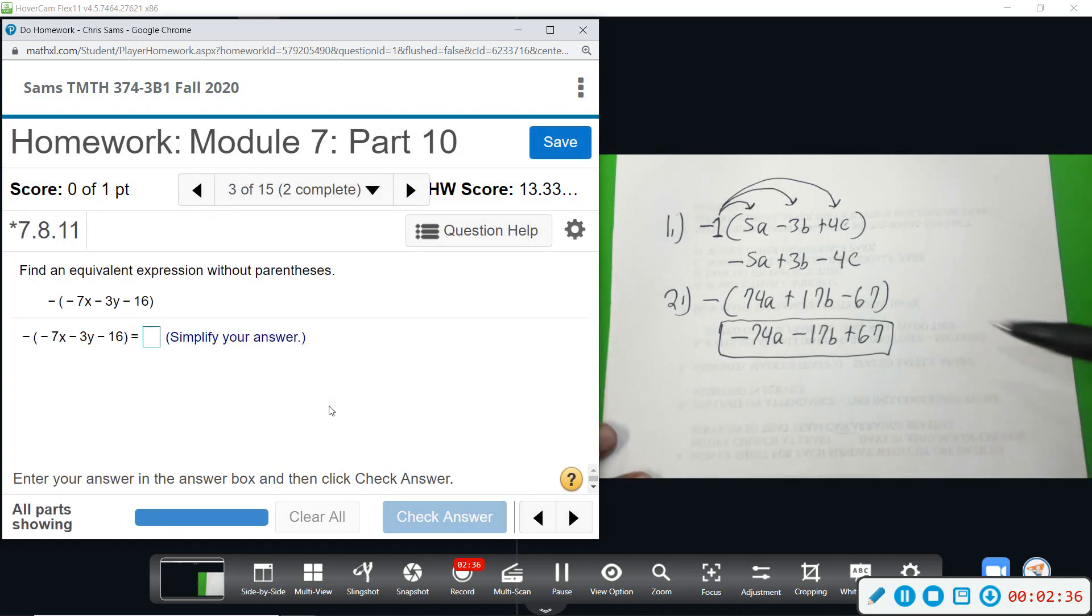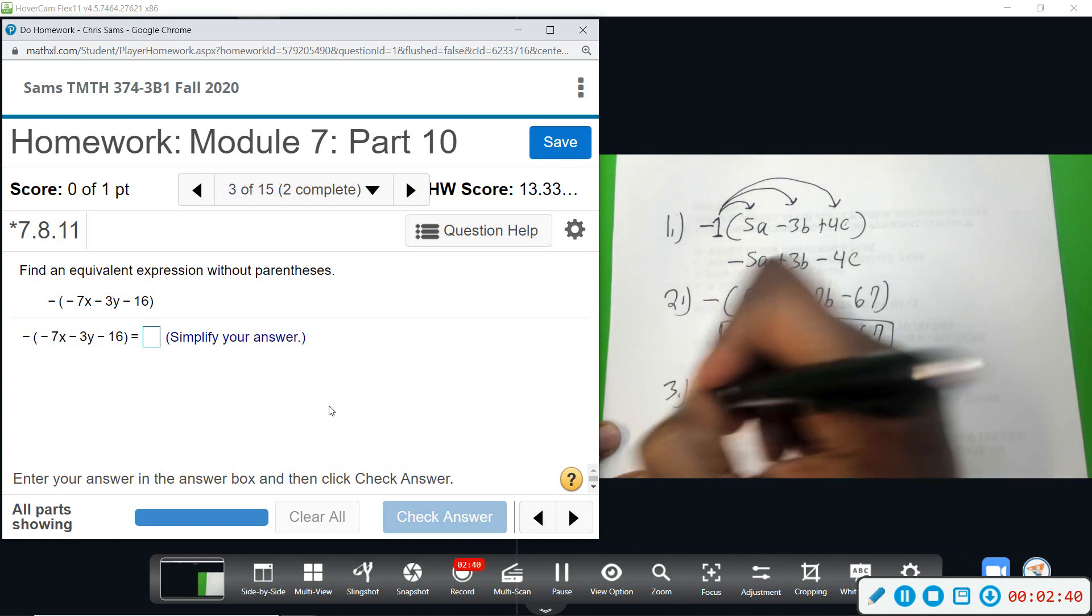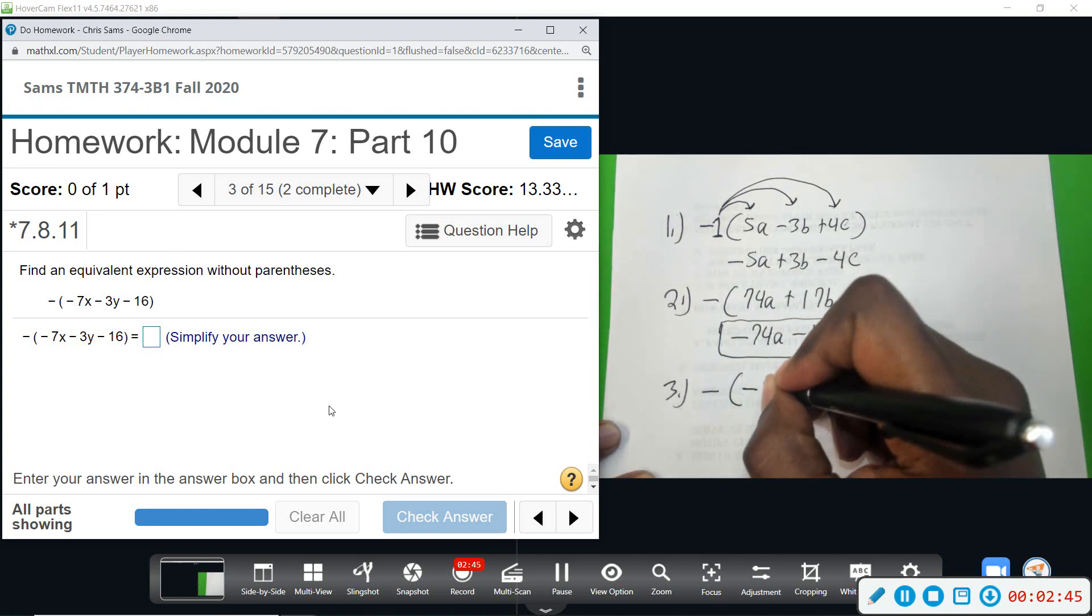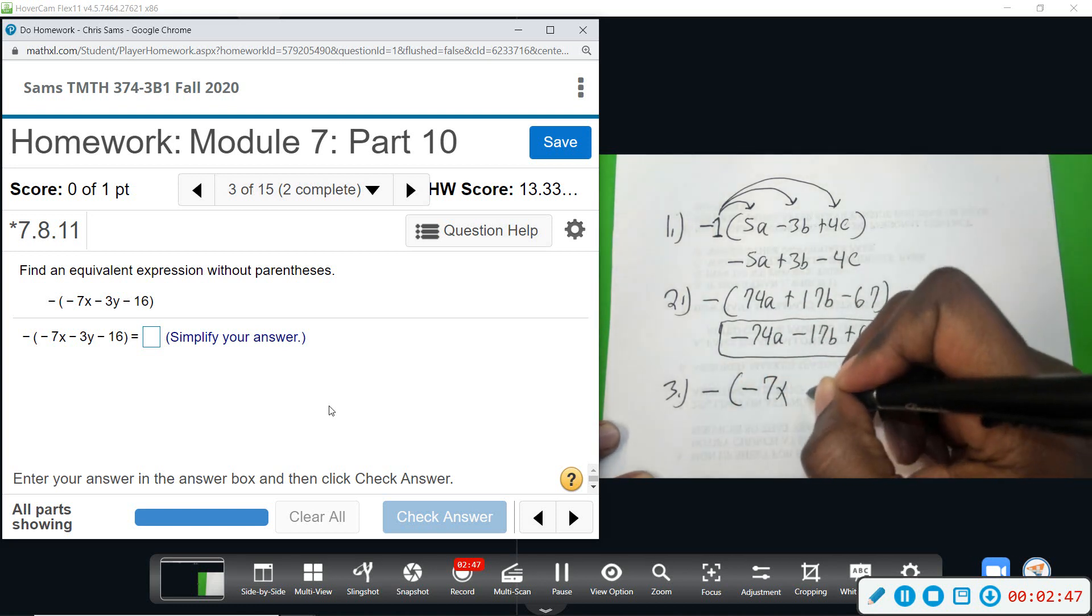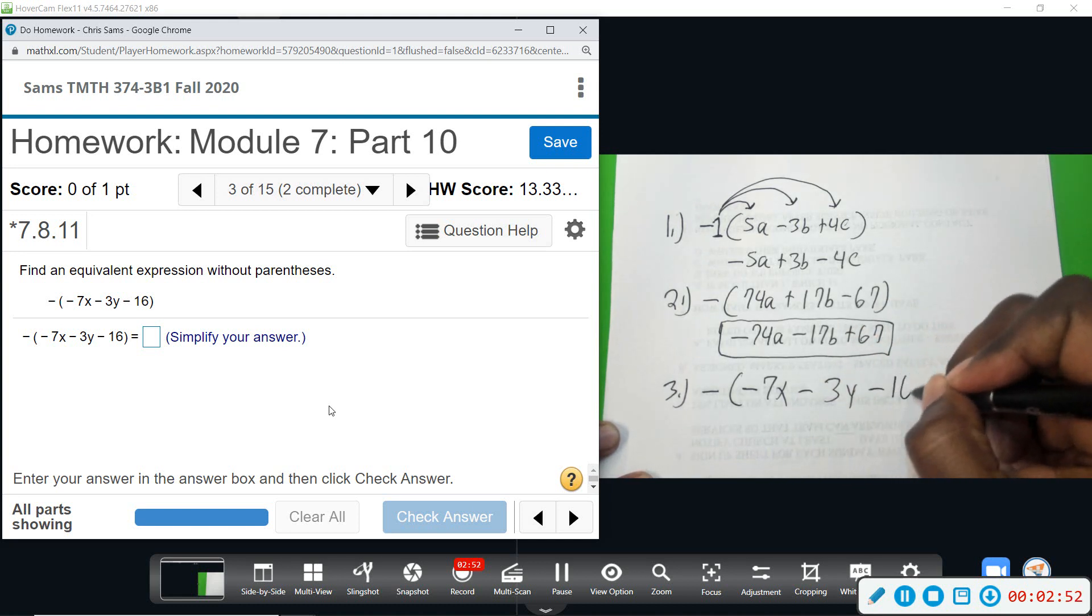All right, I'm going to do the same thing for number 3: negative (7x minus 3y minus 16).